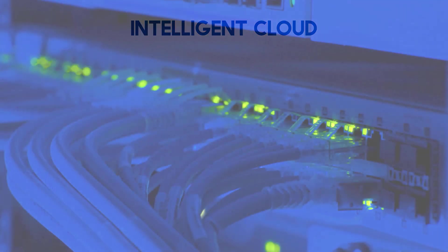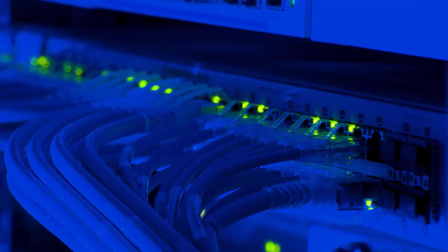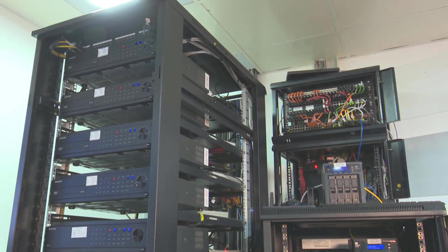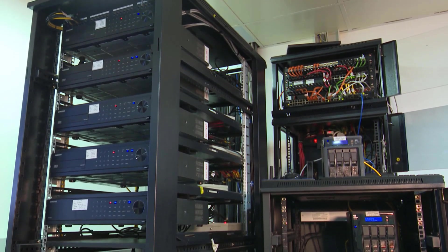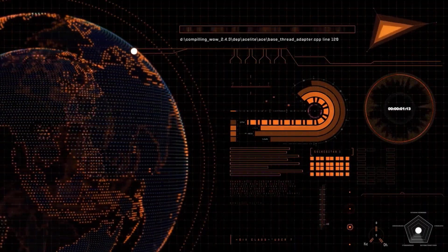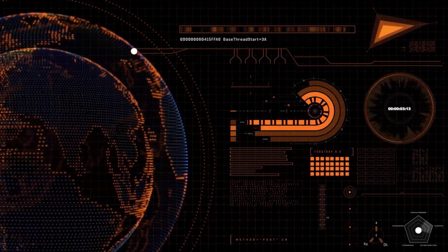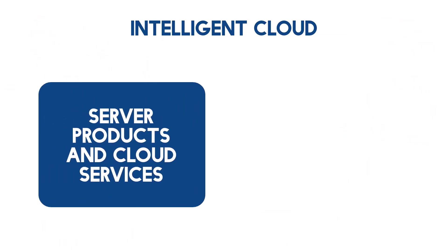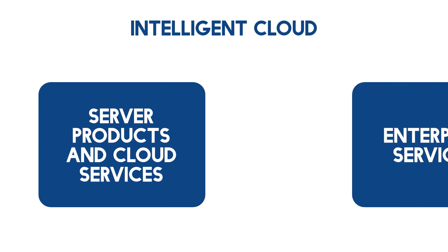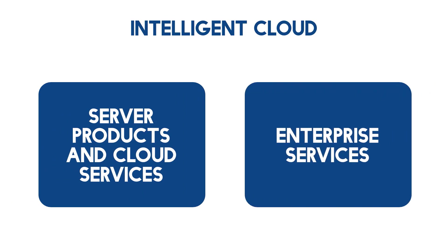The next segment to look at is intelligent cloud. For those that don't know what a cloud business is, every website or web application needs some space on the internet. To host those web pages, you need huge memory storage devices called servers that run 24-7. In a nutshell, this segment is where Microsoft effectively rent out online storage space to companies and individuals. This segment contains server products and cloud services, as well as enterprise services — basically Microsoft support services and also their consulting services.